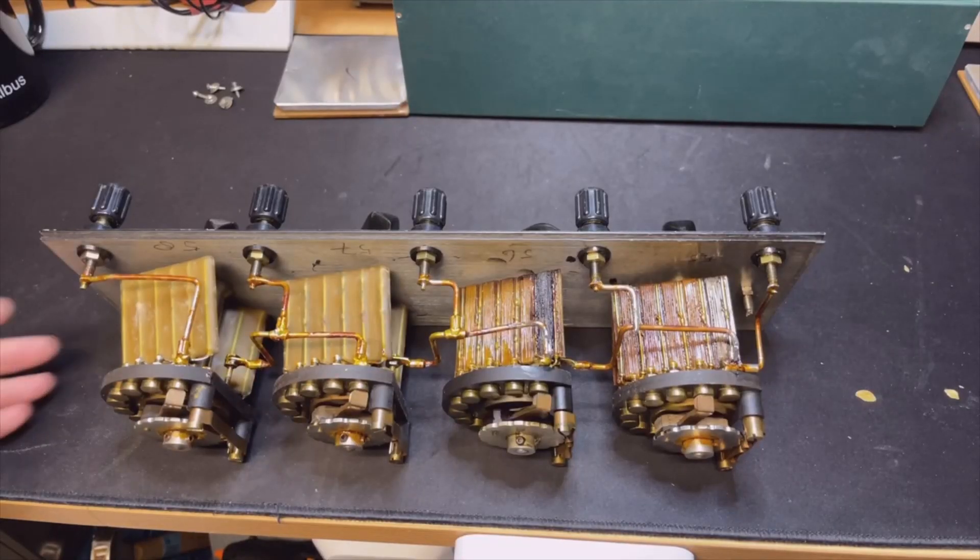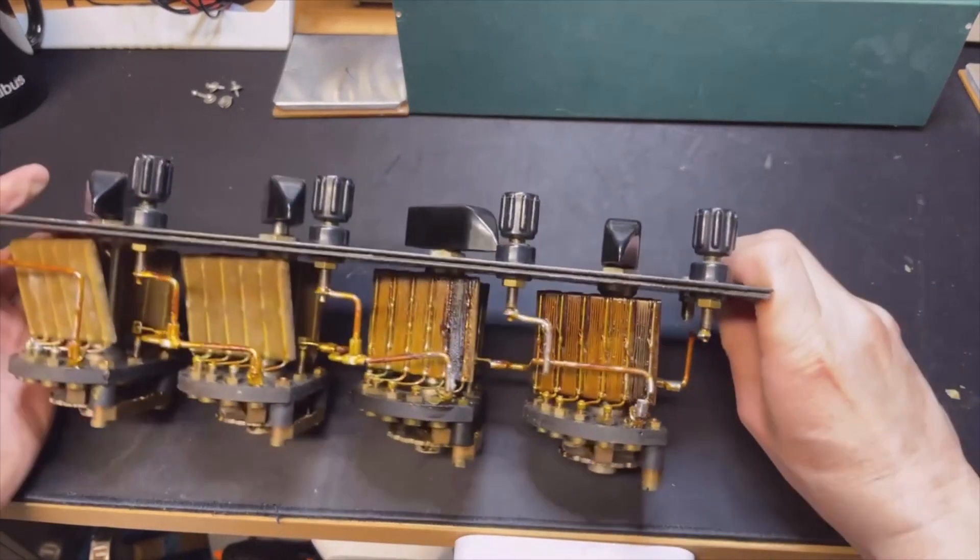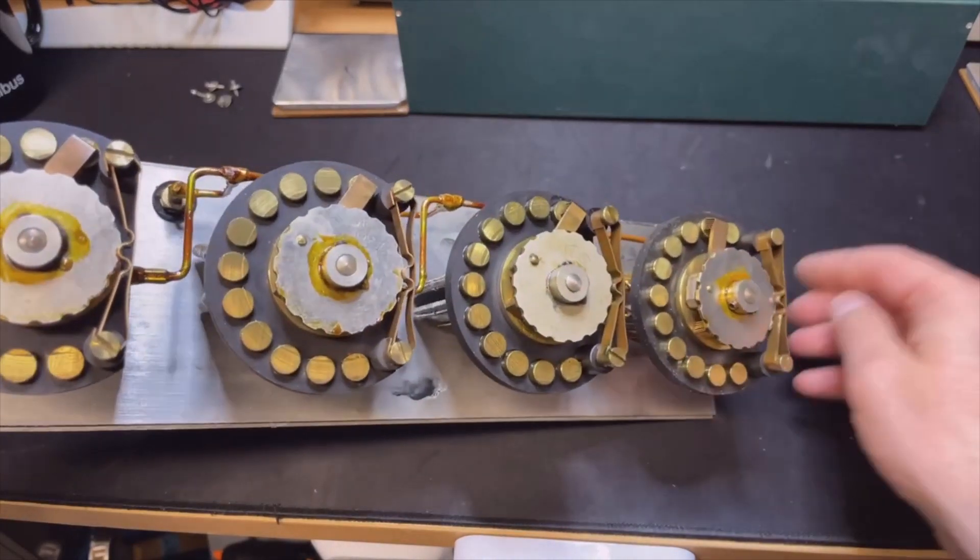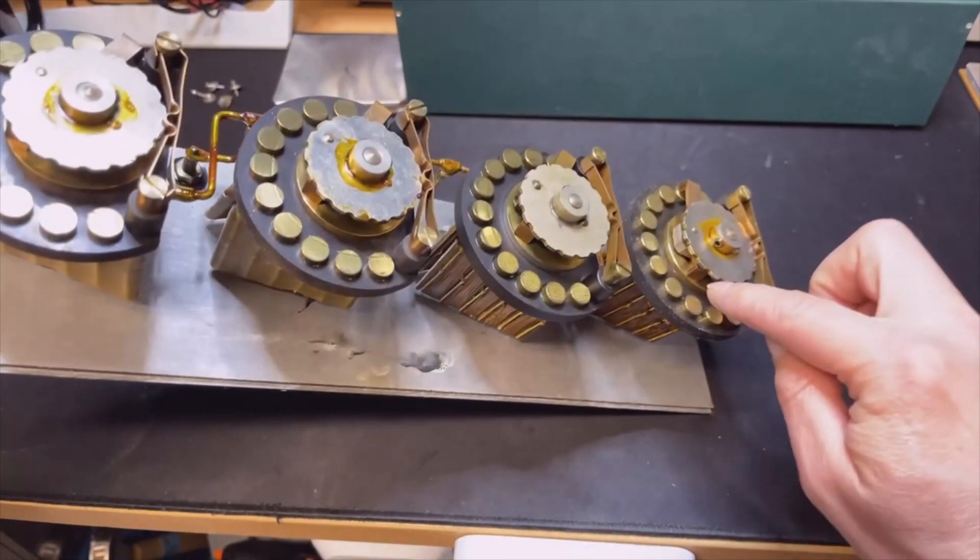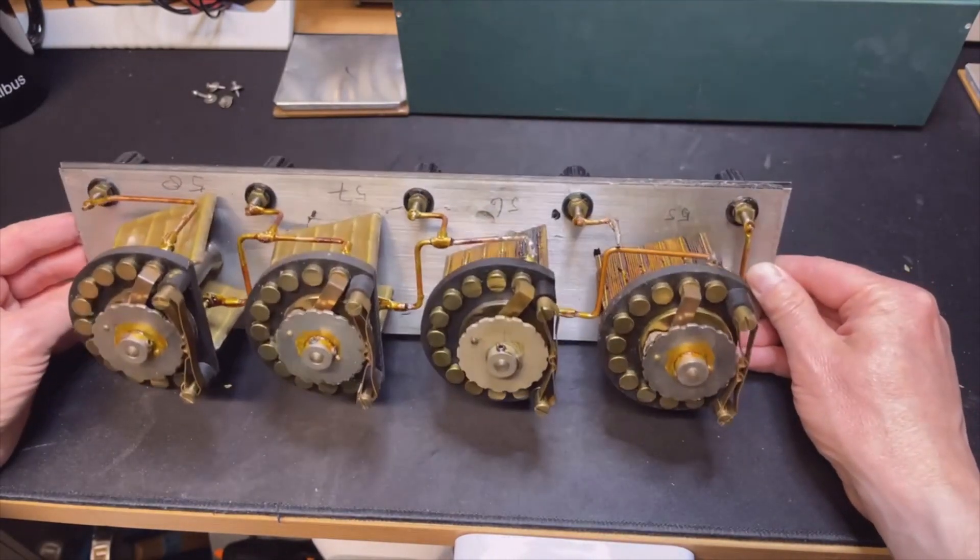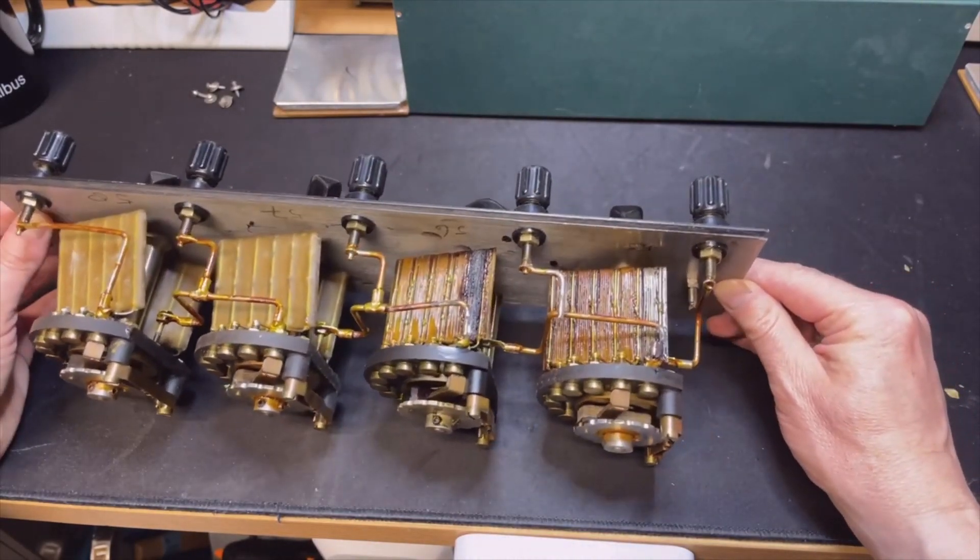Look at this. This looks a lot like the Vivo ones from General Radio and also with the sliding contacts. Only this one doesn't have four sliding contacts, it has five, I think. One, two, three, maybe even six. Let me get a picture of this.